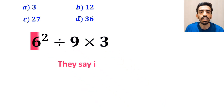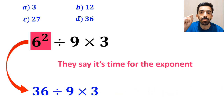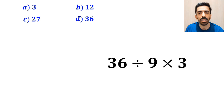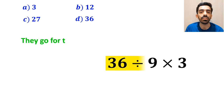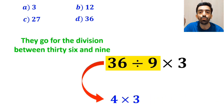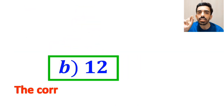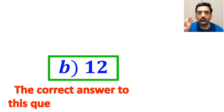Then they say it's time for the exponent, and write 36 ÷ 9 × 3. In the final step, they go for the division between 36 and 9, simplifying to 4 × 3, which finally gives them the answer 12. Without any hesitation, they quickly say that the correct answer is option B.